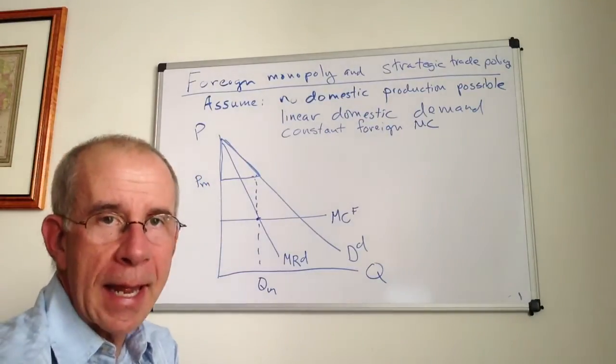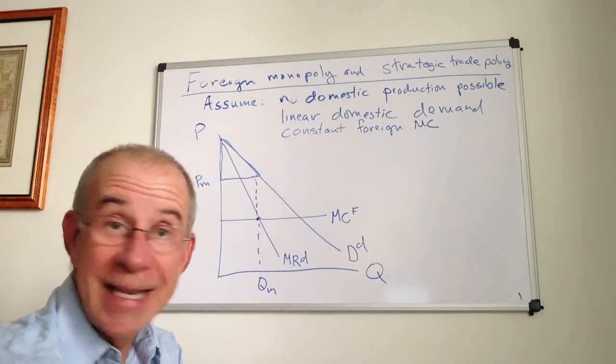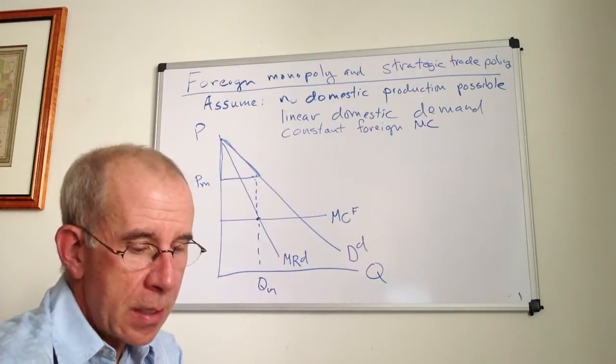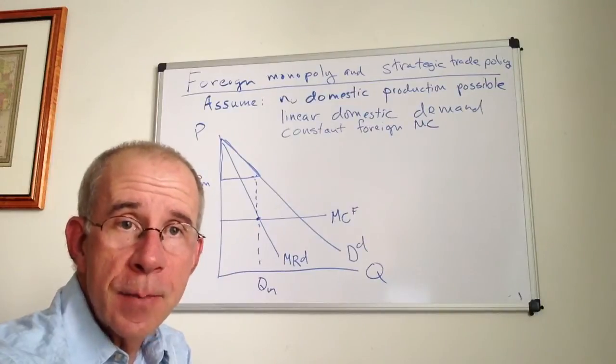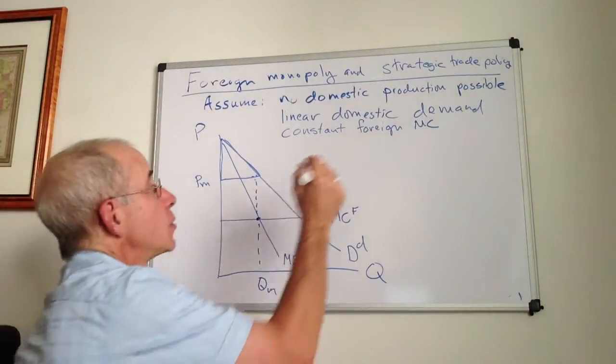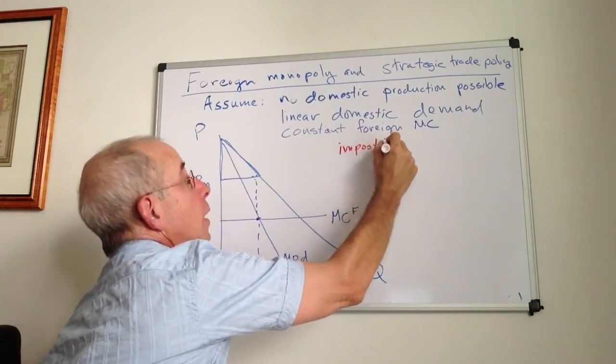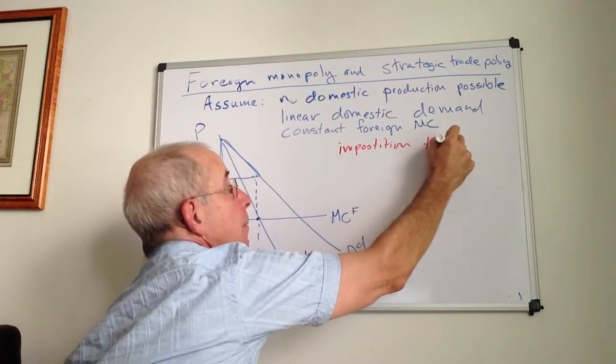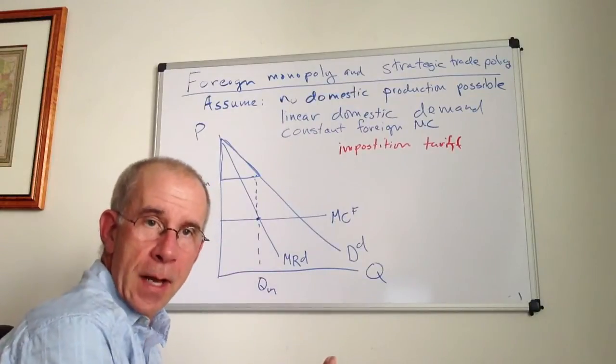So I want to take a look at the possibility of using a kind of strategic decision by the domestic government to improve the situation inside the domestic economy. And in particular, we're going to look at the imposition of a tariff. We're going to examine the benefits and costs of imposing a tariff on this foreign monopolist.